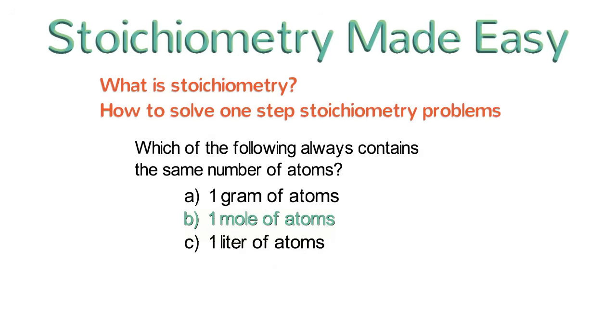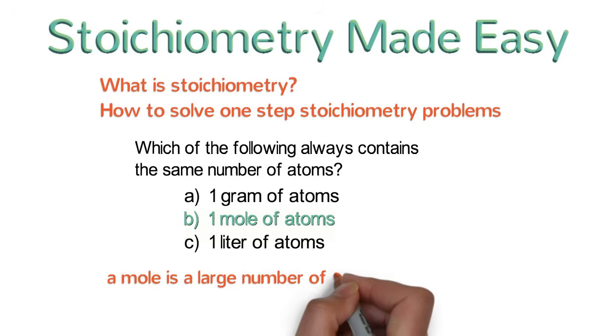One mole of atoms is equal to 600 billion trillion atoms. Remember that just like a dozen is 12 things, a mole is simply a very large number of things. And because the mole refers to the number of things, we will need to use the mole extensively when we do stoichiometry.